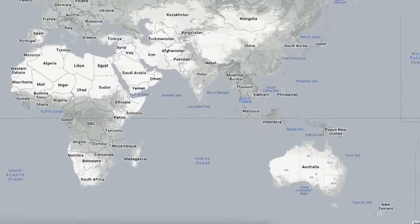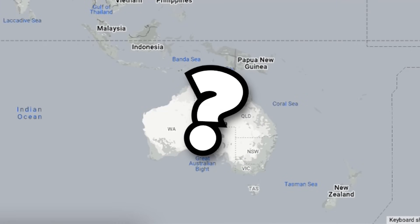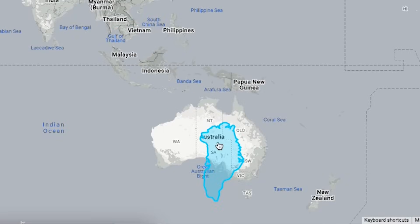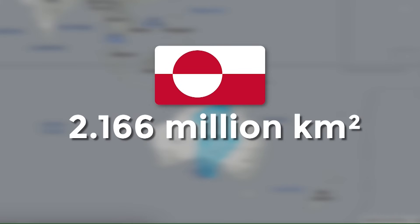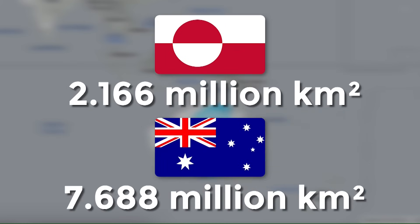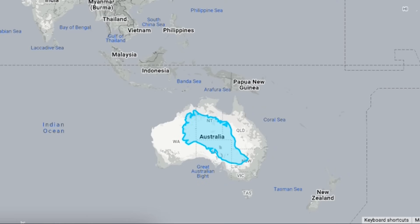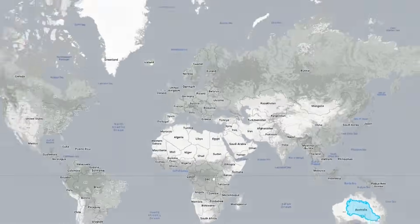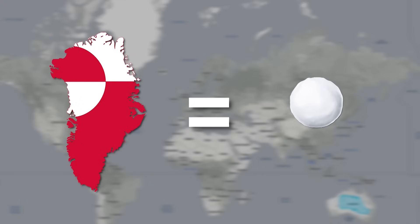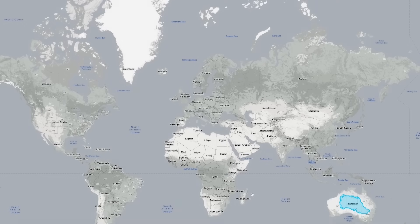We've already touched on Australia, but what can we compare with it? Let's compare Greenland. On the map, Greenland is much larger than Australia. Oddly enough, Greenland is 2.166 million square kilometers and Australia is 7.688 million square kilometers. This is strange because on the map everything looks different. Greenland was portrayed as a huge iceberg, but it turned out to be a small snowball.